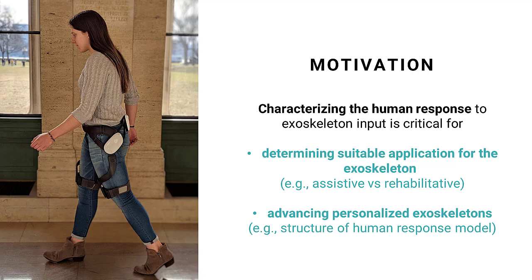Thus, it's important to characterize how the human responds to a given exoskeleton input, as that response tells us the following. First, it tells us what applications a certain exoskeleton controller is suitable for. For instance, when trying to augment or assist a human, the goal behavior is defined for the coupled human-robot system, whereas for rehabilitation, a goal behavior is defined for the human once the robot is removed. Thus, it's important to quantify how the human responds during intervention when the exoskeleton is on, but also what that response is after it is removed, and that will tell you whether this exoskeleton controller is more suitable for assistance versus rehabilitation.